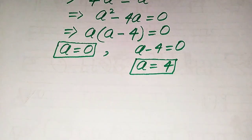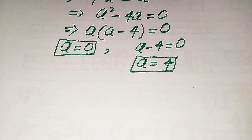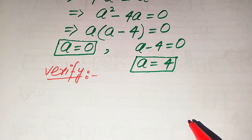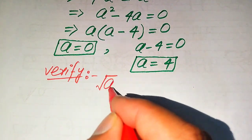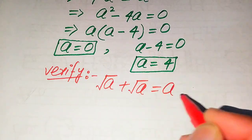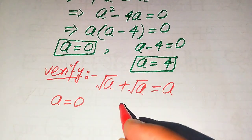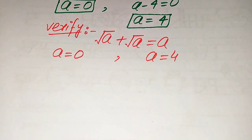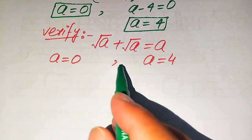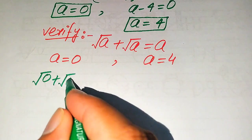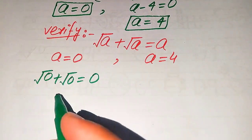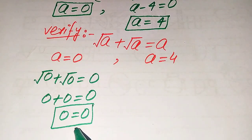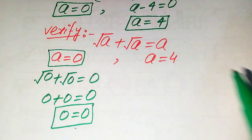These are the two roots from the first method. Now we need to verify whether these two values of a are solutions or extraneous roots. We copy down the given equation: square root of a plus square root of a equals a. We verify a equals zero first. Substituting: square root of zero plus square root of zero equals zero, which gives zero plus zero equals zero, so zero equals zero. Both sides are equal, meaning a equals zero satisfies the equation.